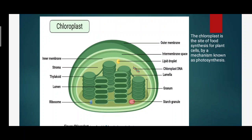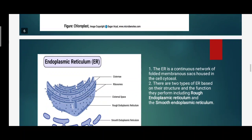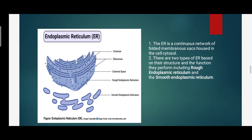The chloroplast is the main site of food synthesis for plants. In the chloroplast there are different parts: outer membrane, inner membrane, and an intermediate space. Disc-like thylakoids are present, and four to six thylakoids combined are called a granum. Chloroplast DNA, starch granules, and ribosomes are also present. Two thylakoids are joined by the lamella. We will study the structure in detail in the next videos.